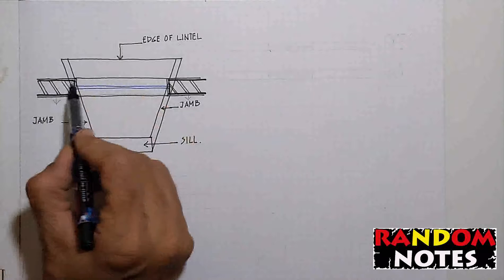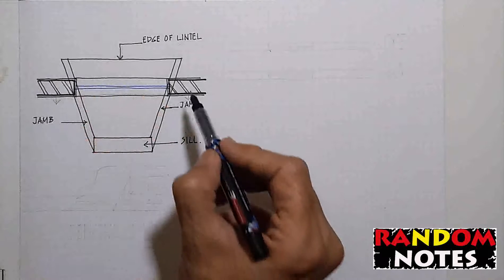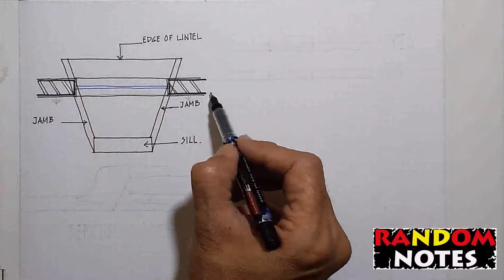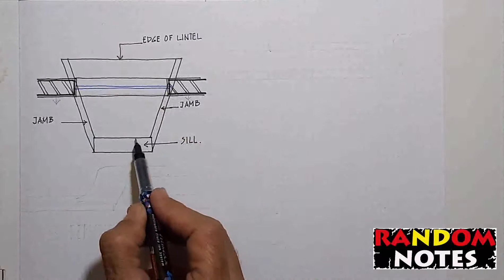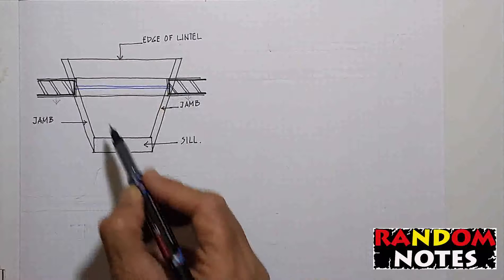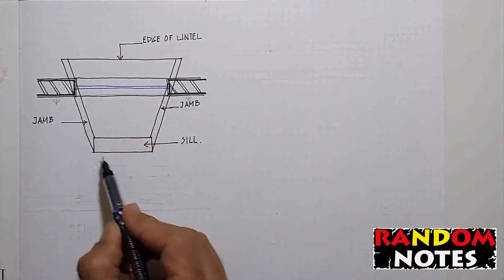This wall is cut by the section plane. So is this one. This represents the back edge of the sill which is here. This represents the front edge of the sill which is here.